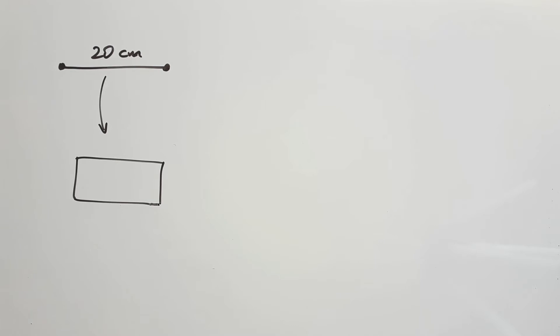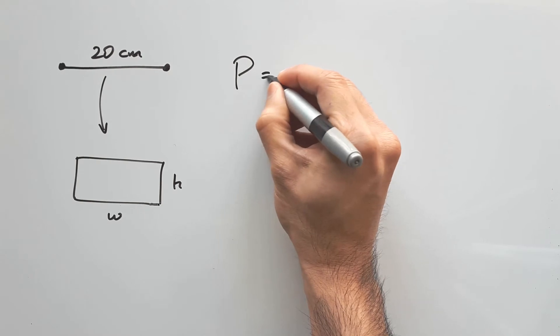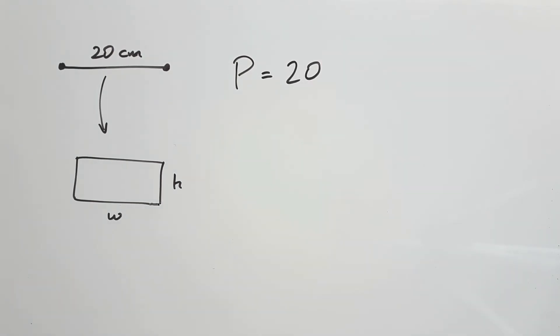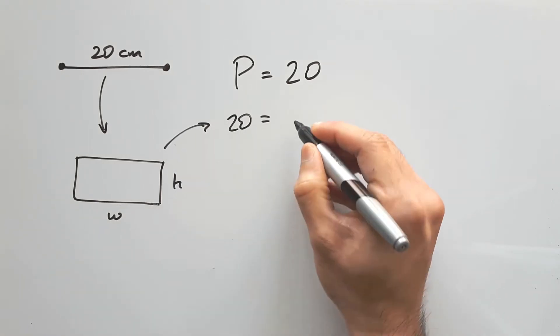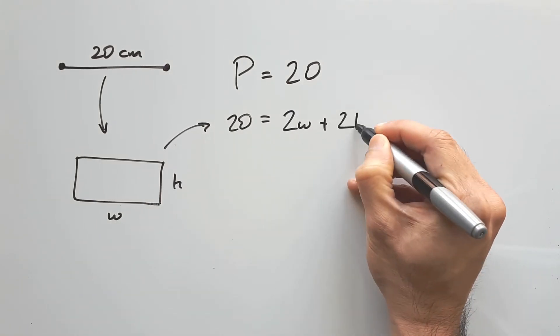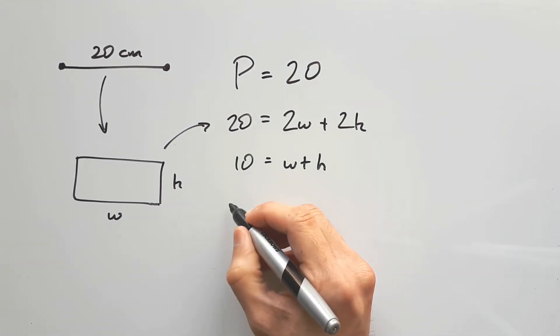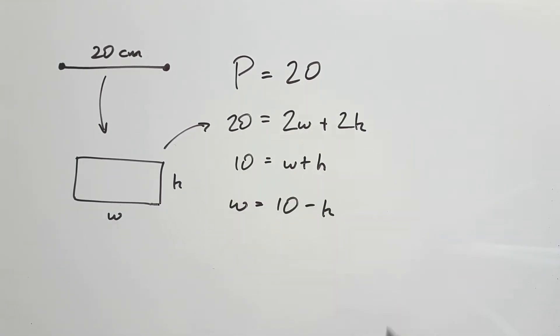So this rectangle would be of a certain width and height with a perimeter of 20 centimeters, since we used the entire string to make it. The way we find perimeter is by adding its width and height together twice. This equation can then be simplified and rearranged to show how the width is calculated using its height.